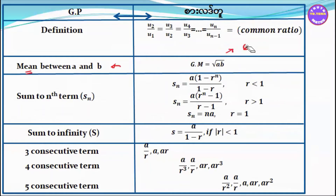Now for the sum — Sn — the number of terms is n. We look at S5, which is the sum of 5 terms, and S10 is the sum of 10 terms. The formula for Sn for an AP is: Sn equals n by 2 times (2a plus n-minus-1 times d), and Sn equals n by 2 times (a plus l), where l is the last term.